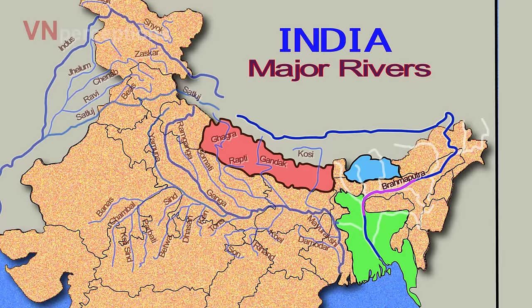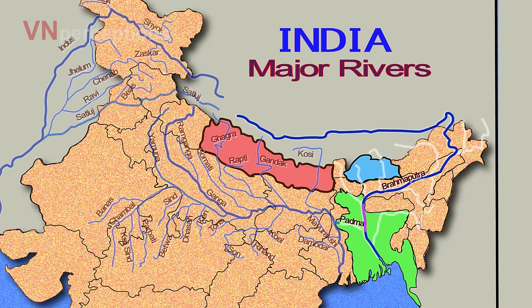In Bangladesh, the Brahmaputra is joined by River Tista, and then it is known as Jamuna. Later on, it merges with the lower Ganga, called River Padma.